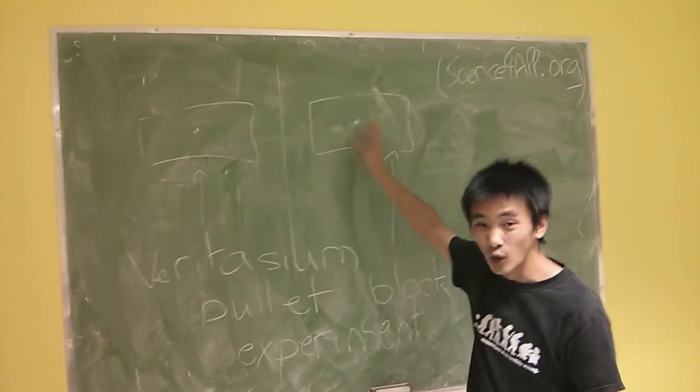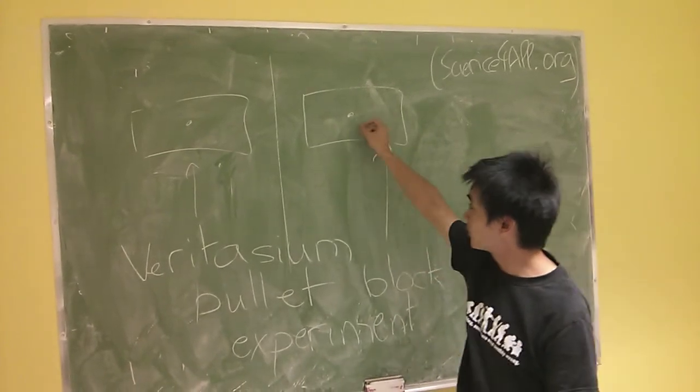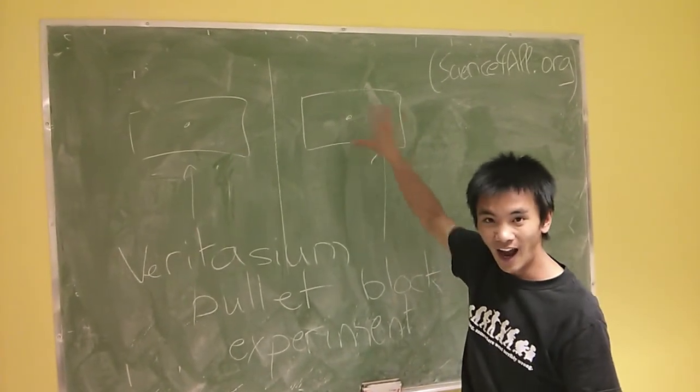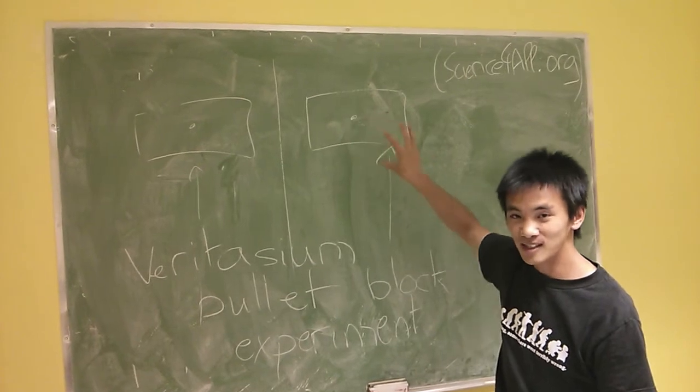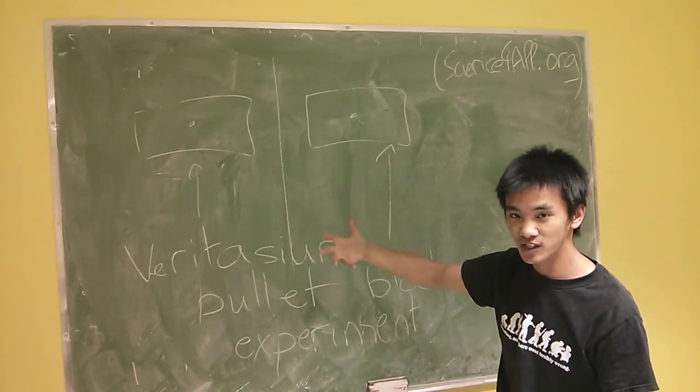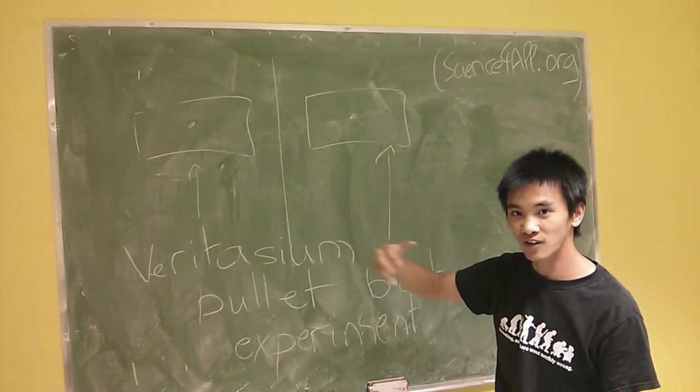Well, it actually goes into destroying the block. As you can imagine, when you shoot with a bullet, the block gets highly deformed. And this deformation requires energy, and that's where most of the energy of the bullet goes.